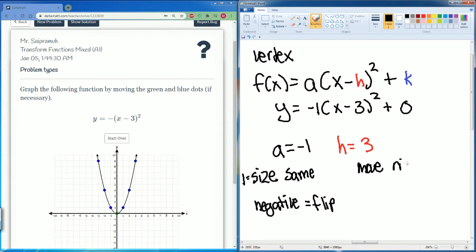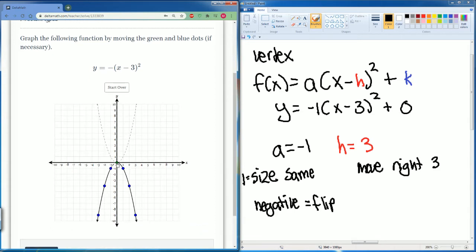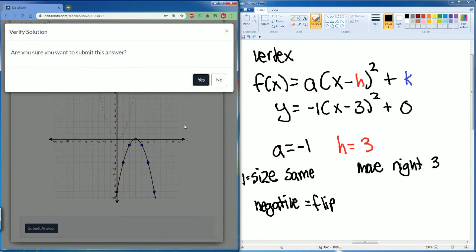First of all, we have this and we're going to flip it. So it was at (1, 1). Now it becomes (1, negative 1). That's just me flipping it. Then we move to the right 3. So grab the green dot, move it right 3: 1, 2, 3. And then submit your answer.